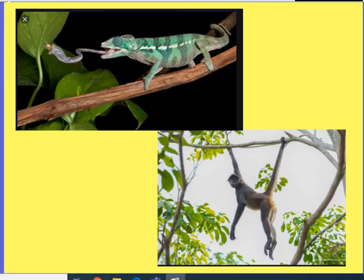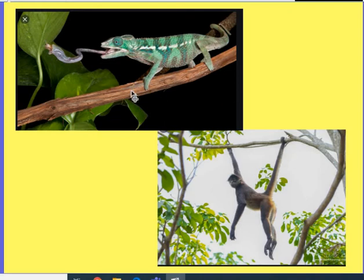I've got two animals here: a chameleon and a spider monkey. Both of these animals live in the jungle, which is a place that has a lot of trees. You can see that both animals are in the trees. Both have adaptations that help them survive there. One reason they live in the trees is because it's safe — they're able to climb and get away from danger. Other animals that might want to hurt them can't follow as easily. Plus, a lot of the food that they eat is in the trees. So these animals need adaptations to help them stay in the trees.